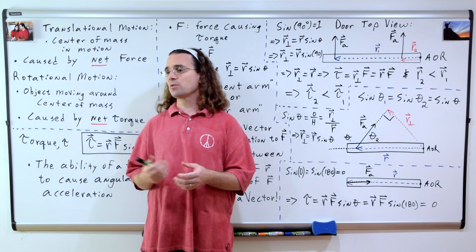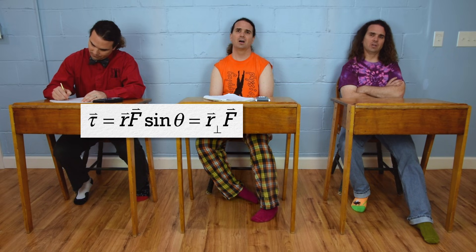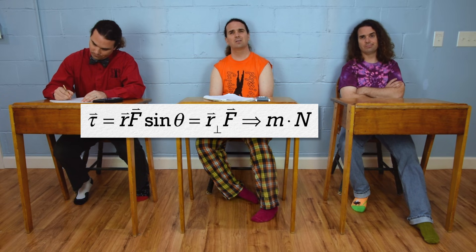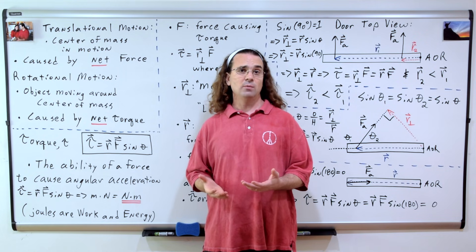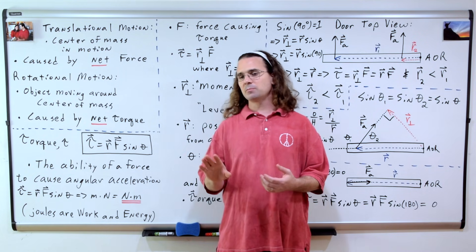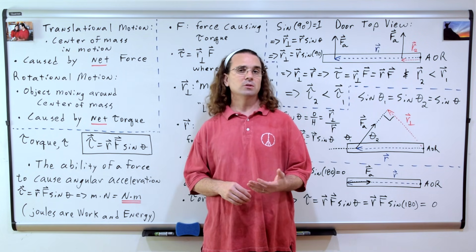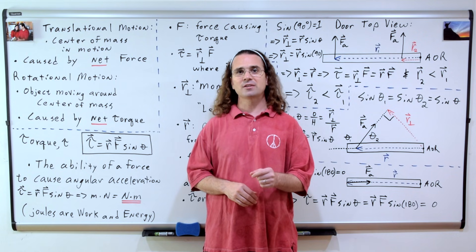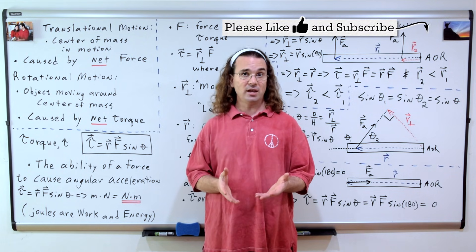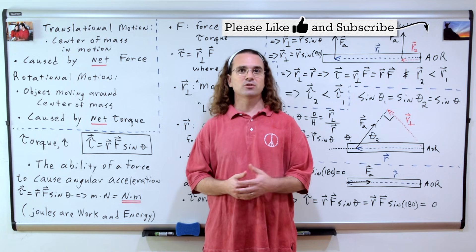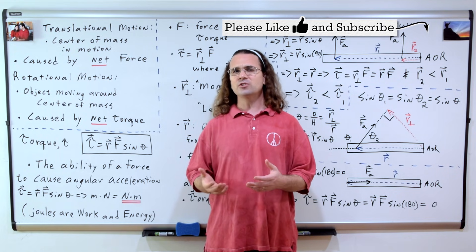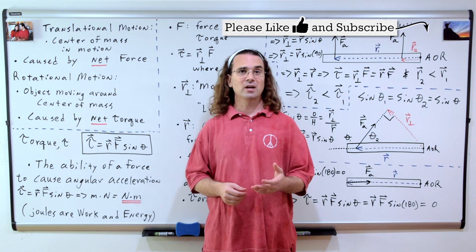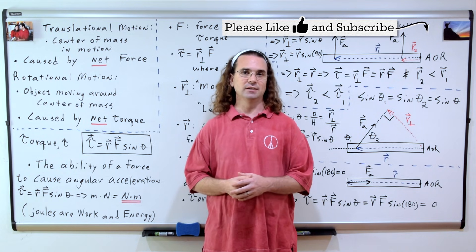Lastly, Bo, please determine the units for torque. Torque equals moment arm times force, so meters times newtons. Aren't those joules? Typically we use newton meters. And yes, Bobby, newton meters are joules. However, because torque is a vector and entirely different from work and energy, which are scalars, we use newton meters for torque and joules for work and energy. It is easier to identify torque as different from work and energy when we use different units for each.